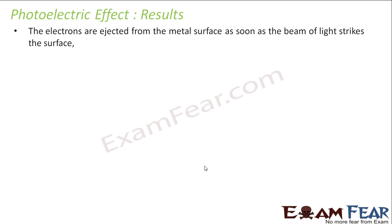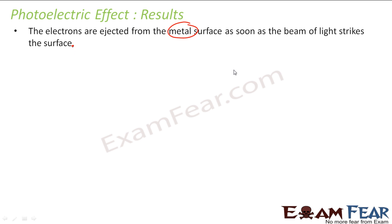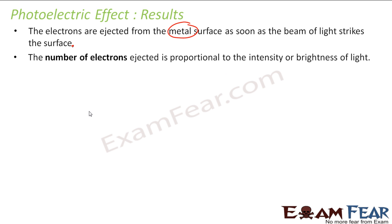The results he got from the experiment were: electrons are ejected from the metal surface as soon as the beam of light strikes. There is no waiting time. The moment the beam of light strikes the metal surface, the electrons come out.